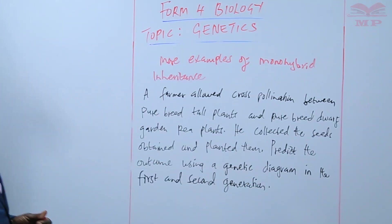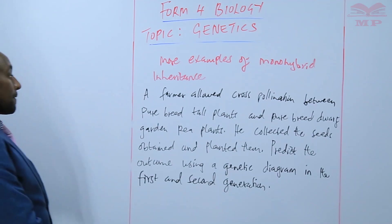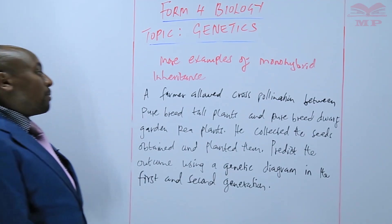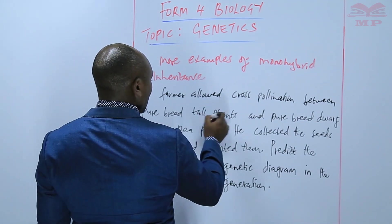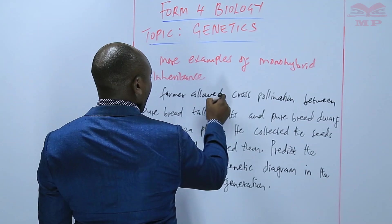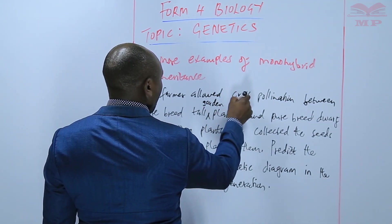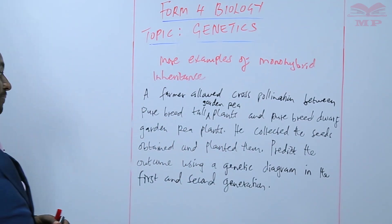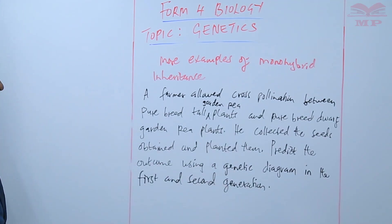We'll use as an example that a farmer allowed cross pollination between pure breed tall plants and pure breed dwarf garden pea plants. He collected the seeds obtained and planted them.